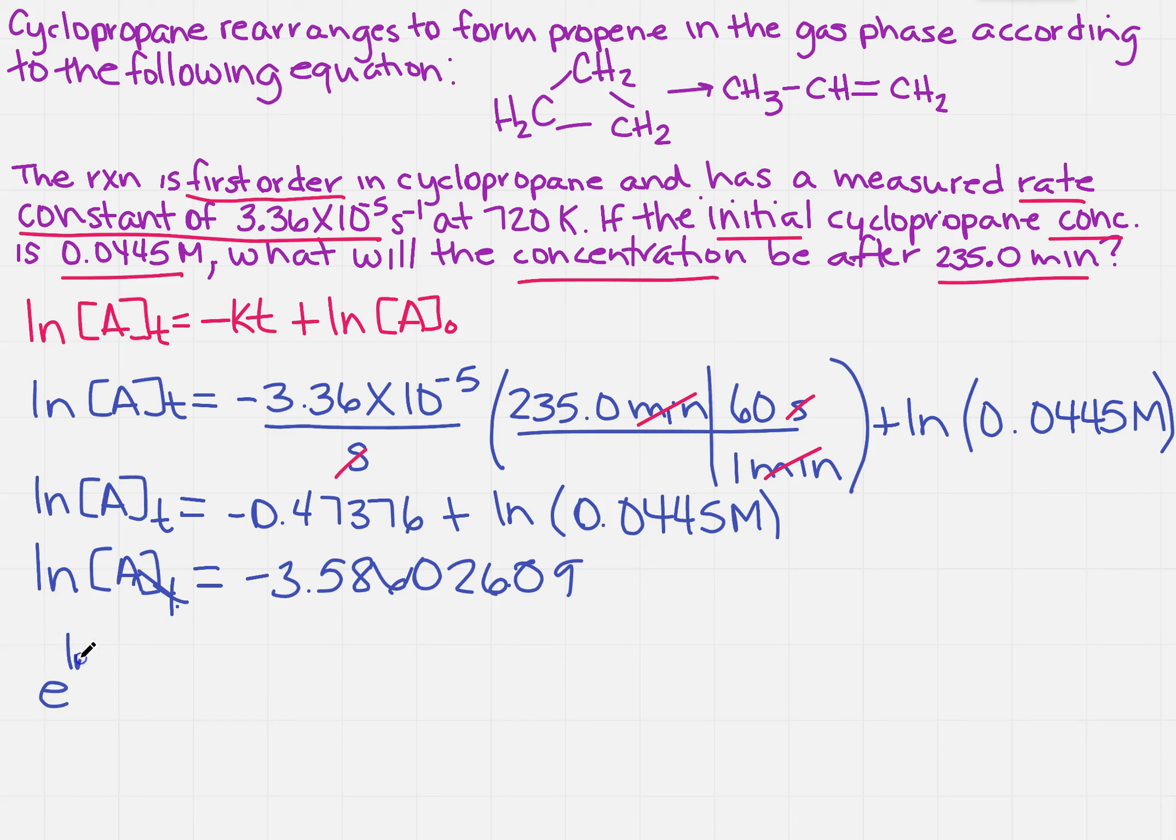So I'm going to take E to the natural log of the concentration of A at time T. And then I'm going to take E of that number, so this minus 3.58602609.